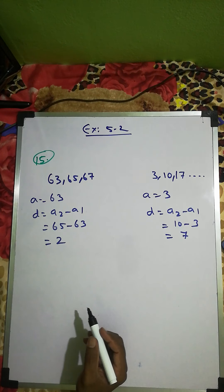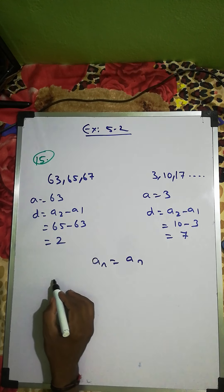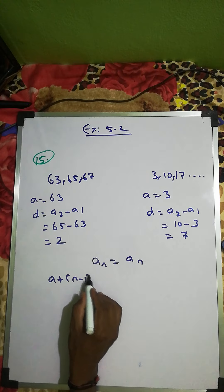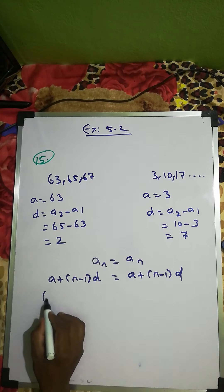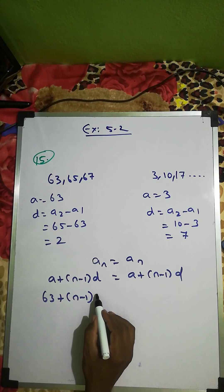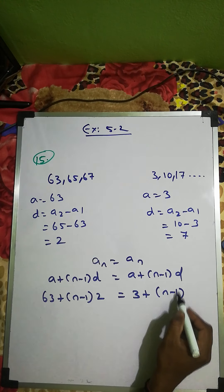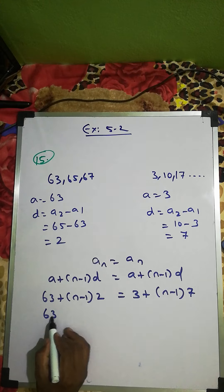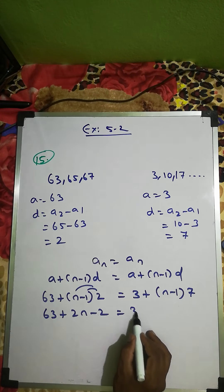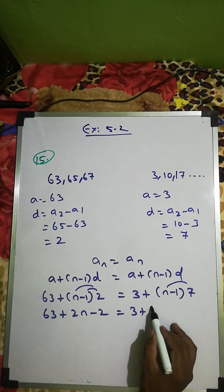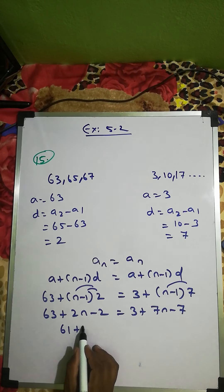Since both nth terms are equal, we set a + (n-1)d = a + (n-1)d. So 63 + (n-1)×2 = 3 + (n-1)×7. Expanding: 63 + 2n - 2 = 3 + 7n - 7, which gives 61 + 2n = 7n - 4.